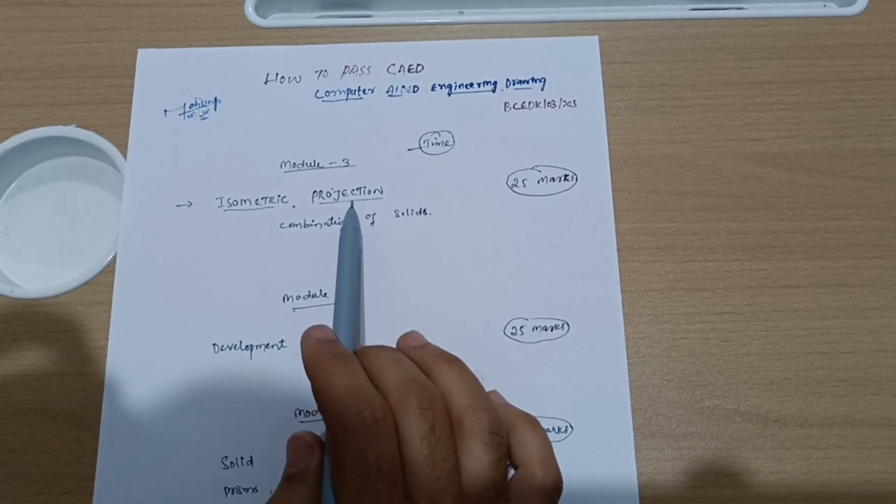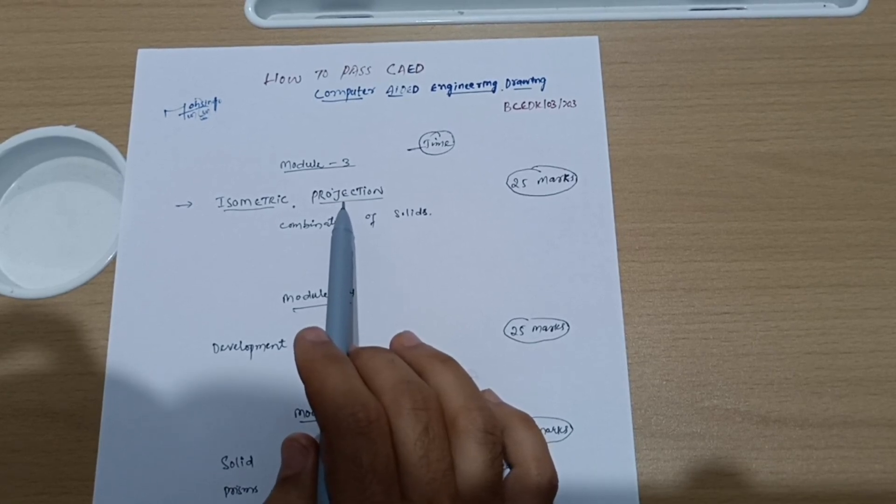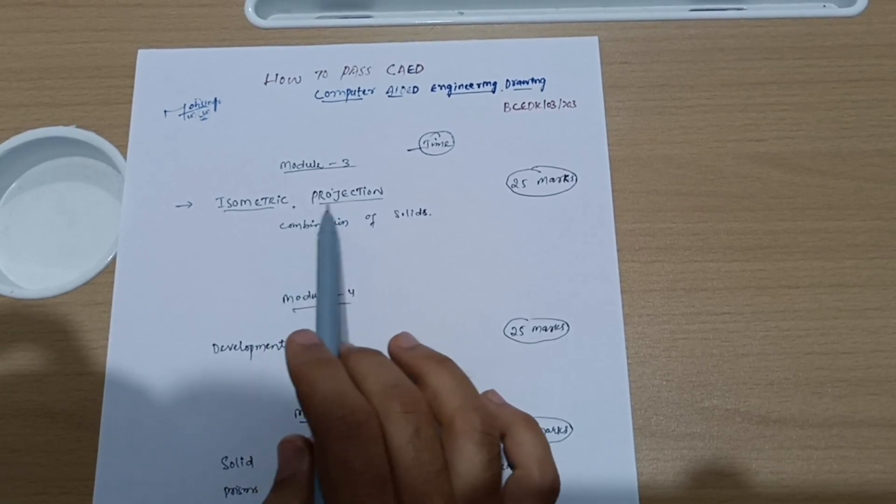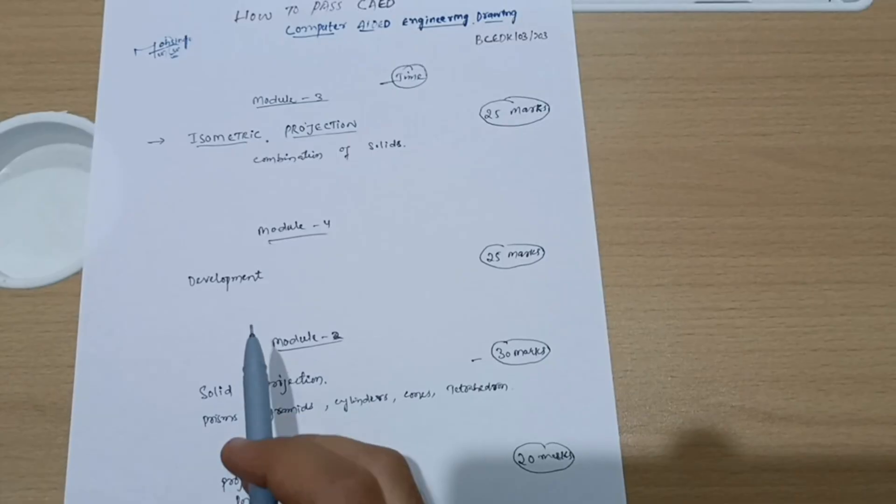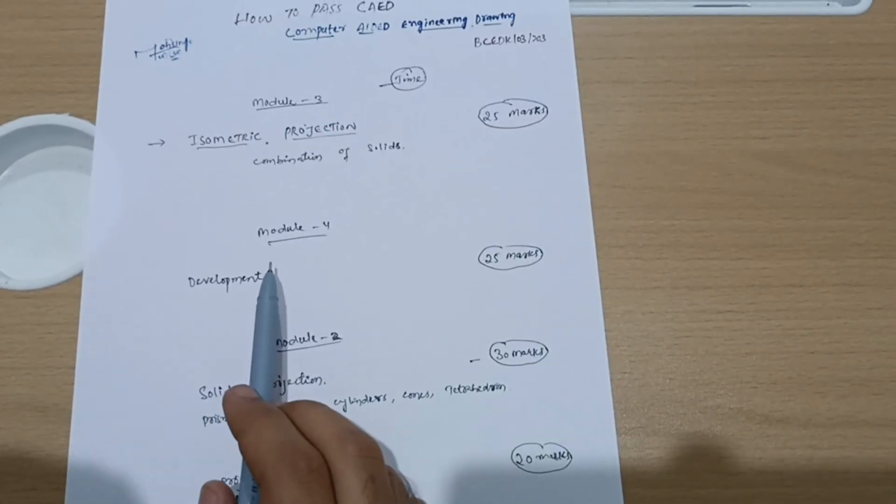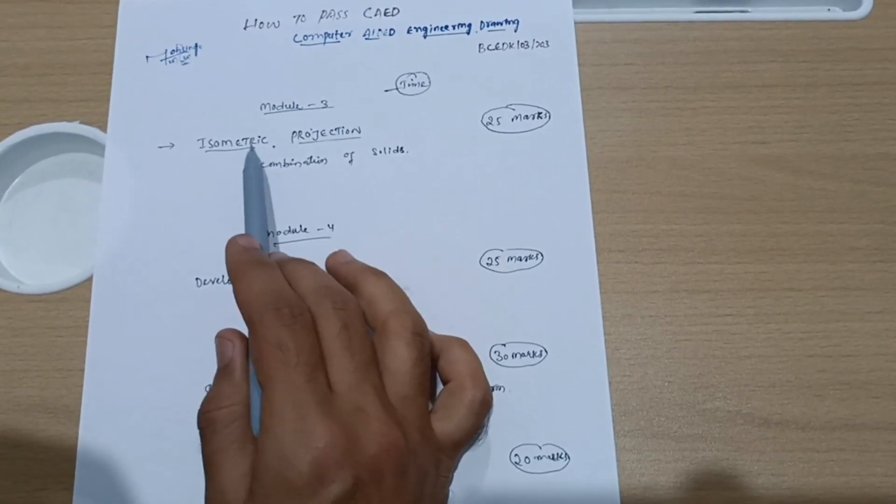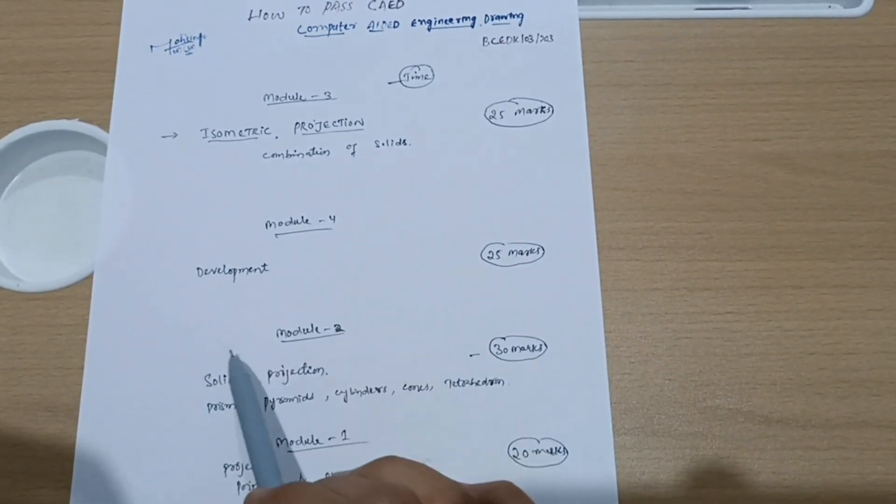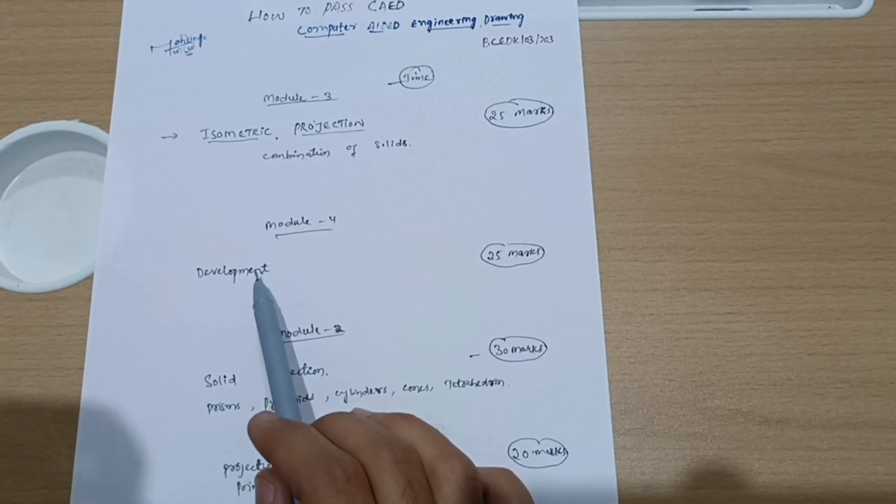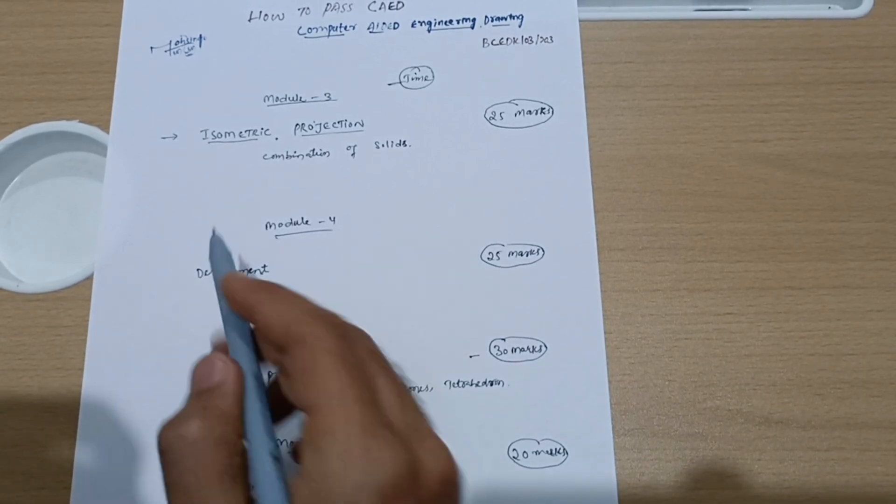If you know how to convert the normal scale into isometric scale, then you should attempt Module 4, which is development. Comparatively, it is typical than isometric but easier than solid projection and projection of points and plans. So second priority should be development.